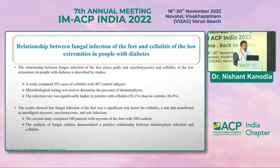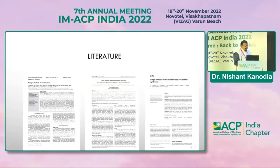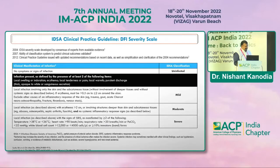Another study demonstrated Candida albicans at the top, followed by Candida glabrata and Candida tropicalis. The relationship between fungal infection of the foot and cellulitis of the lower extremities depends on the type and severity of infection. A study of 243 cases of cellulitis and 467 controls found significantly higher infection rates with cellulitis than in controls. Another study of 100 patients with onychomycosis and 200 controls demonstrated a positive relationship between dermatophyte infection and cellulitis.